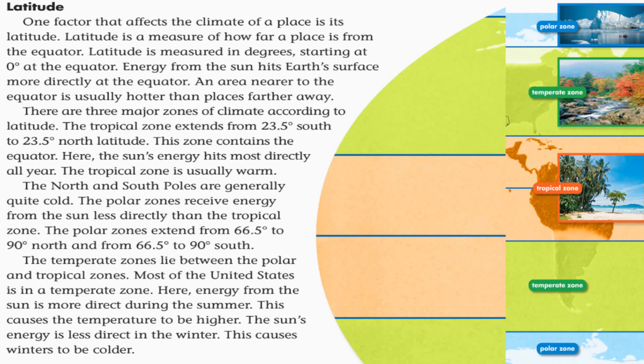The temperate zones lie between the polar and tropical zones. Most of the United States is in the temperate zone. Here, energy from the sun is more direct during the summer, causing higher temperatures, and less direct in the winter, causing colder winters.